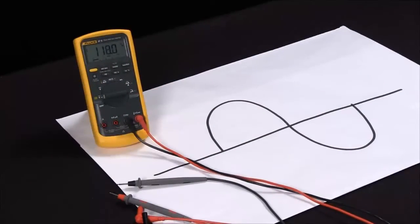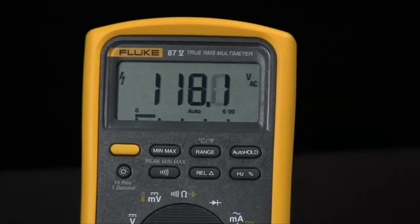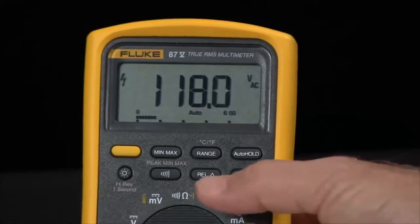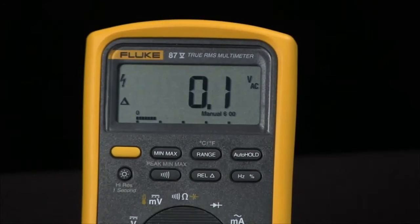So here we have a 117 volt sine wave. If I go to the source and then hit the relative, that goes to zero. If I now went out to the load and saw minus 10 volts, I would know I would have a voltage drop.